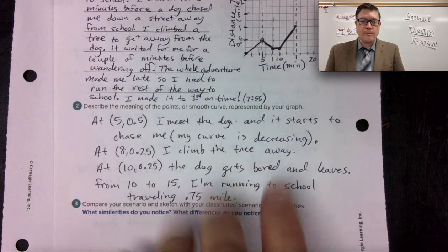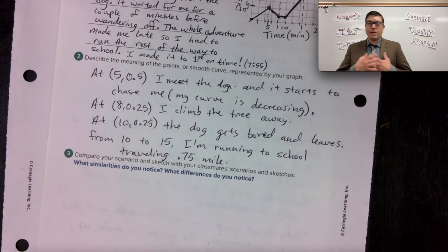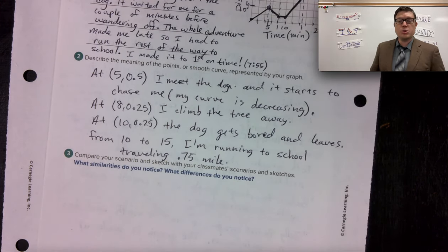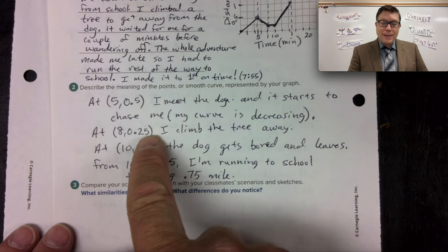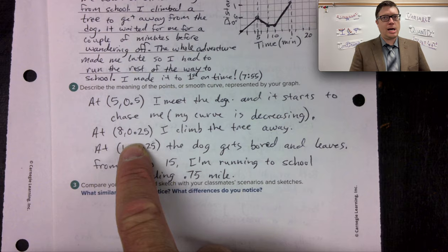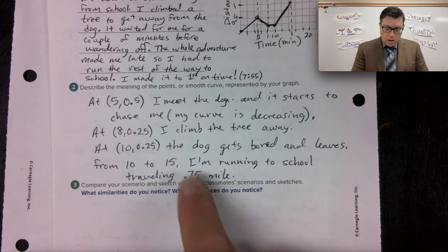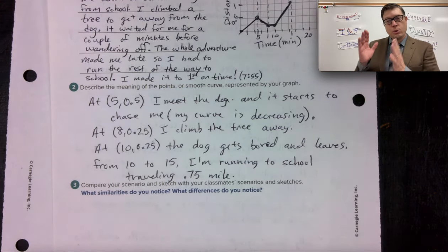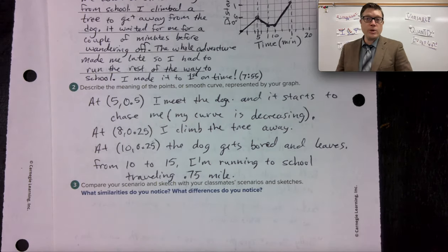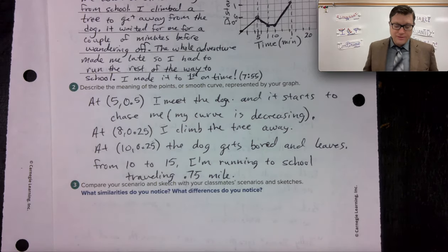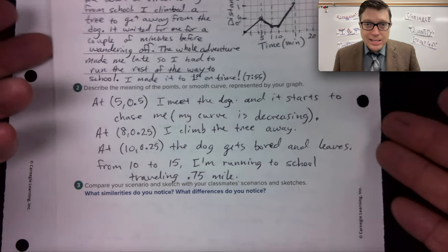I'm going to leave number three blank because you need to compare your scenario to a sketch of your classmates and you need to do this analysis of what's happening at a specific coordinate. What's happening at that specific coordinate. Are you increasing faster in one interval than another interval? That's a math word I need. We have these things that are going to define the mathematics of the story.